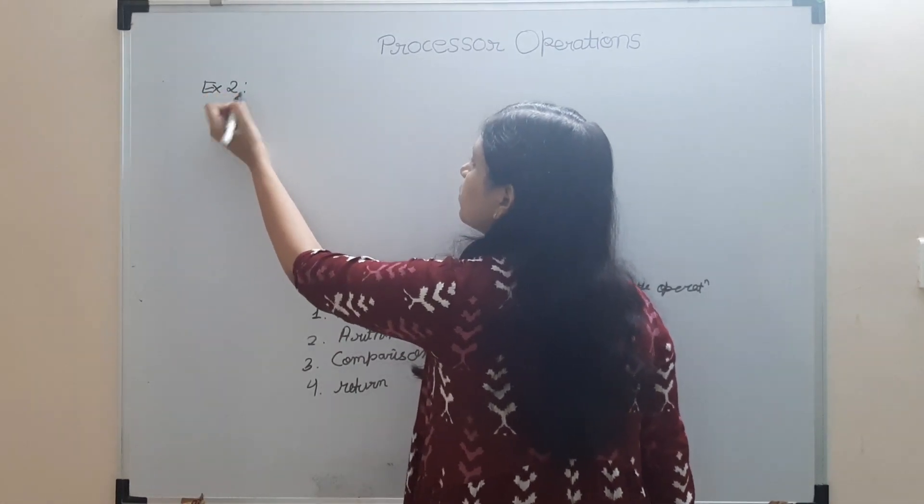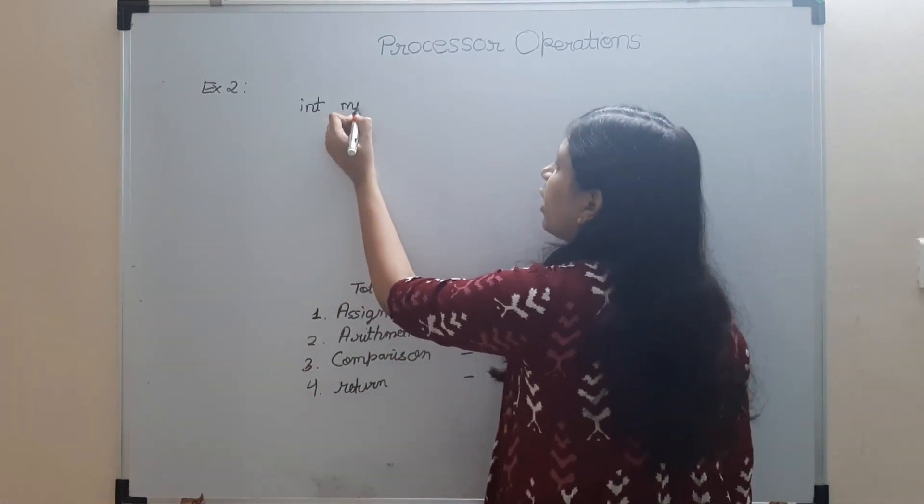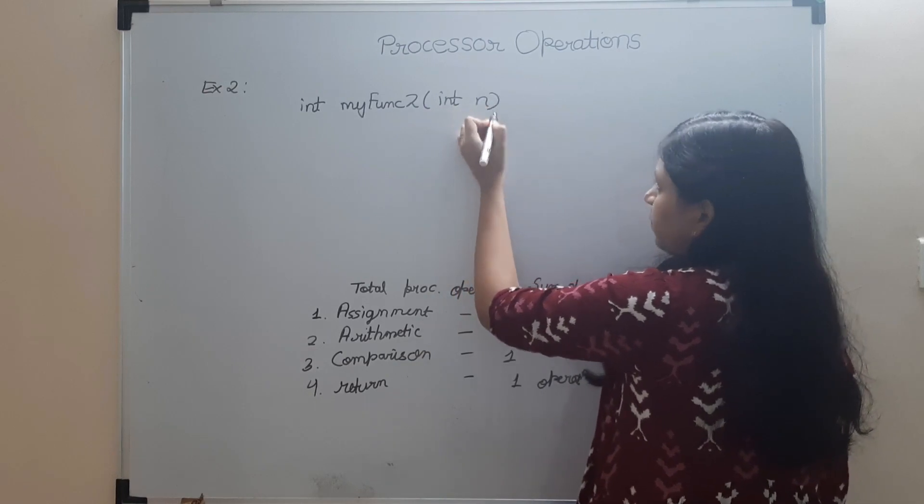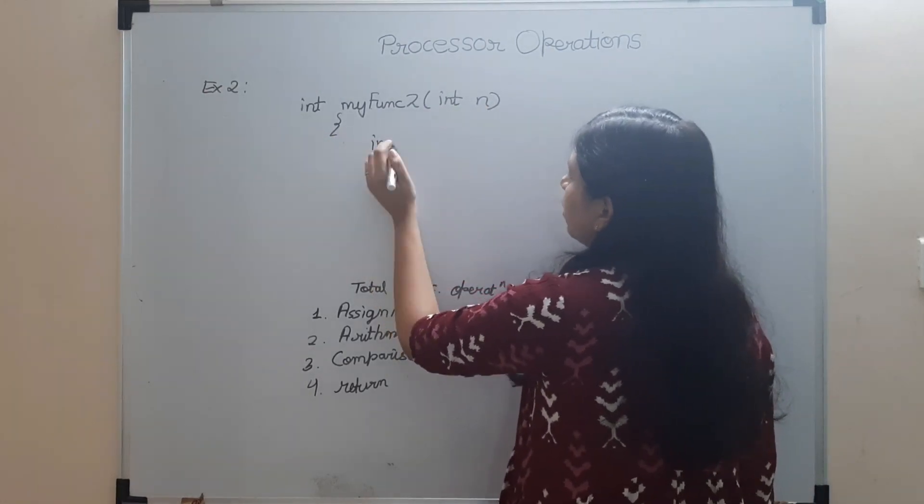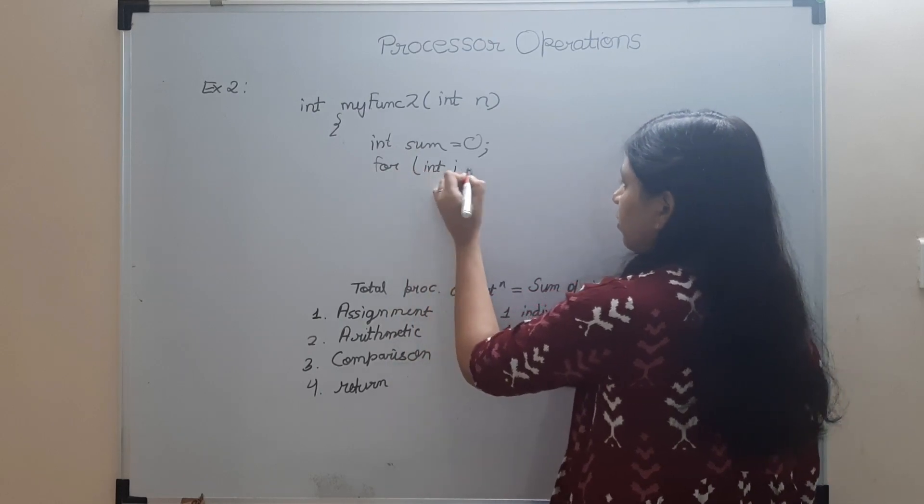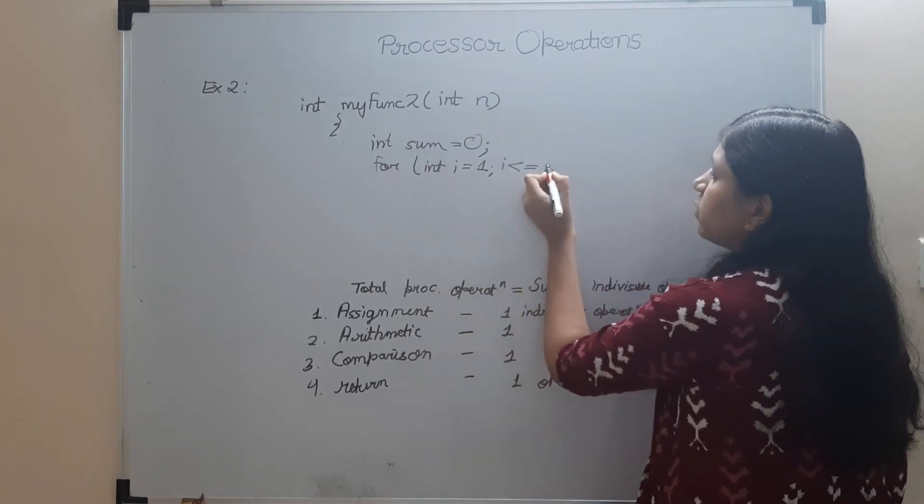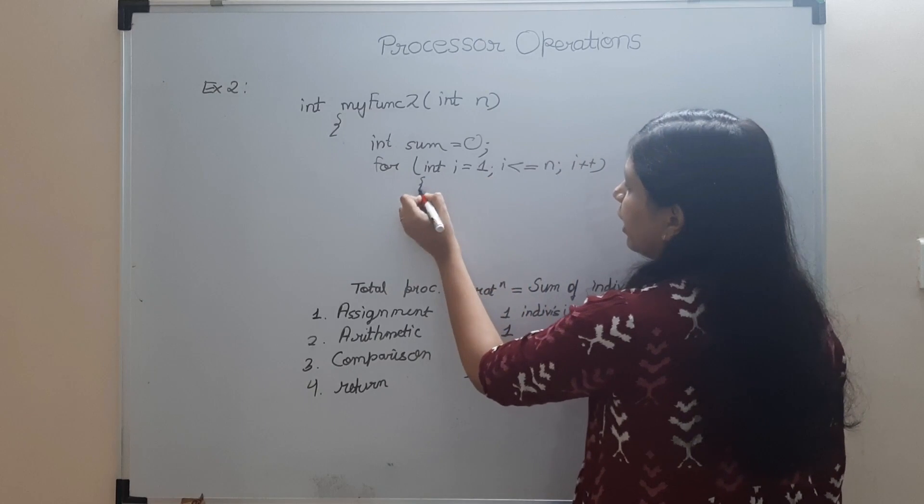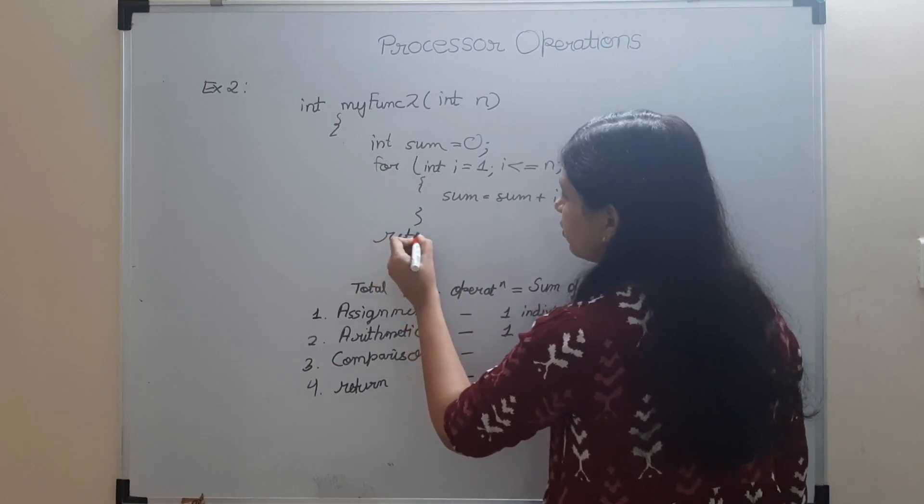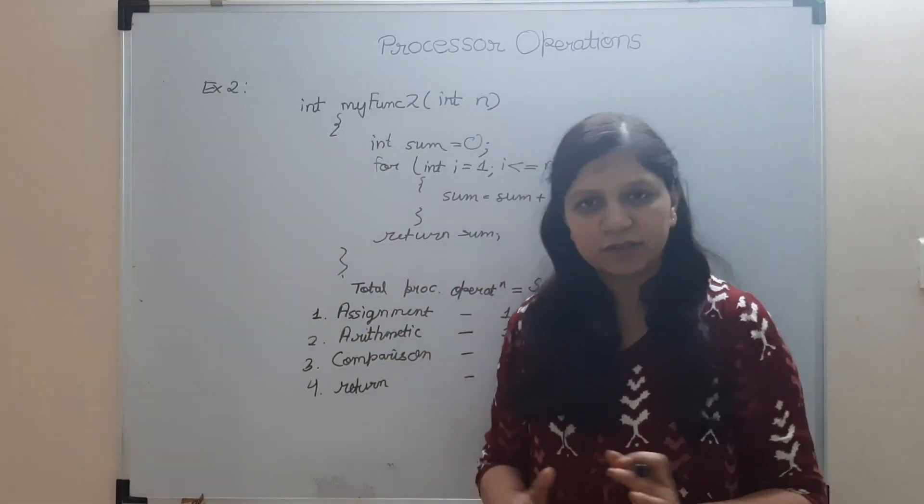Let's take another example. Example 2. Next, consider some loop statements here. Int mySum(int n). What am I going to do here? Int sum = 0. For int i = 1, i <= n, i++, it will give sum of n natural numbers. sum = sum + i. And after that, we will return sum. Tell me the number of processor operations it is going to take.